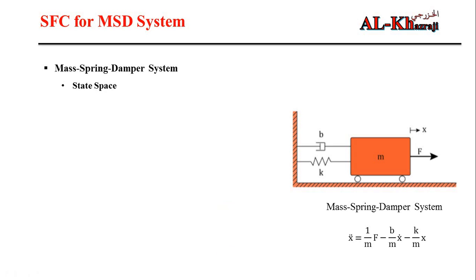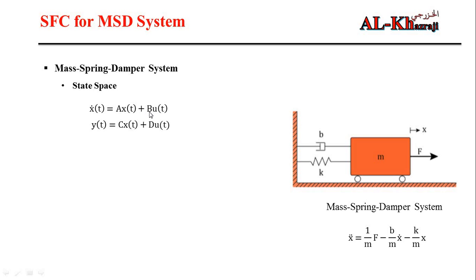Now we derive the state space model. In state space there are two equations: the state equation and the output equation. The state equation is x-dot = Ax + Bu, where A is the dynamic matrix, B is the input matrix, and u is the control input. The output equation is y = Cx + Du, where C is the output matrix and D is the forward matrix. For more details on state space modeling, a link is in the description.